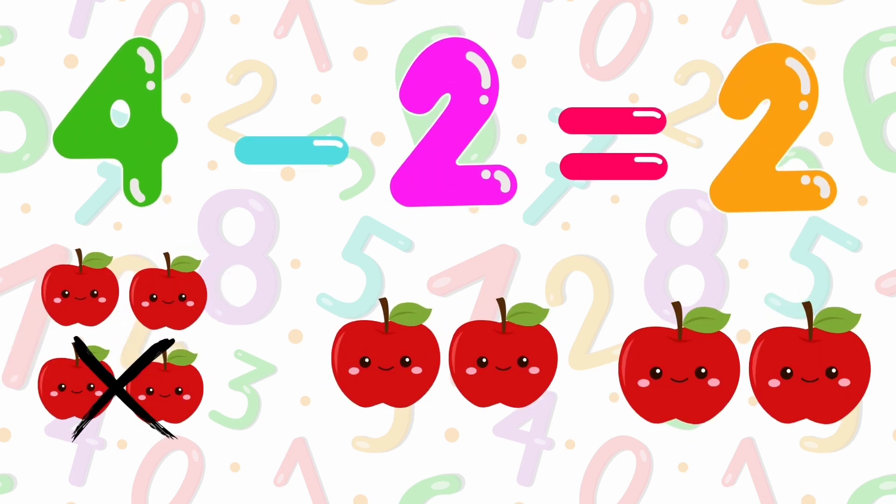4 minus 2 is equals to 2. 4 apples minus 2 apples is equals to 2.